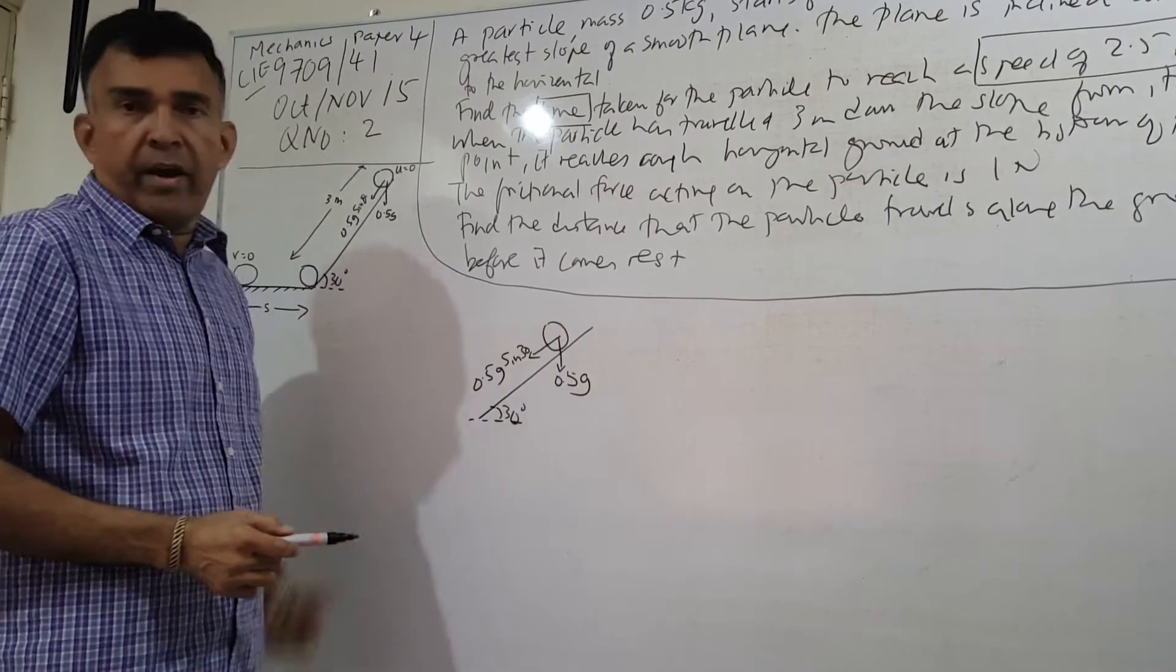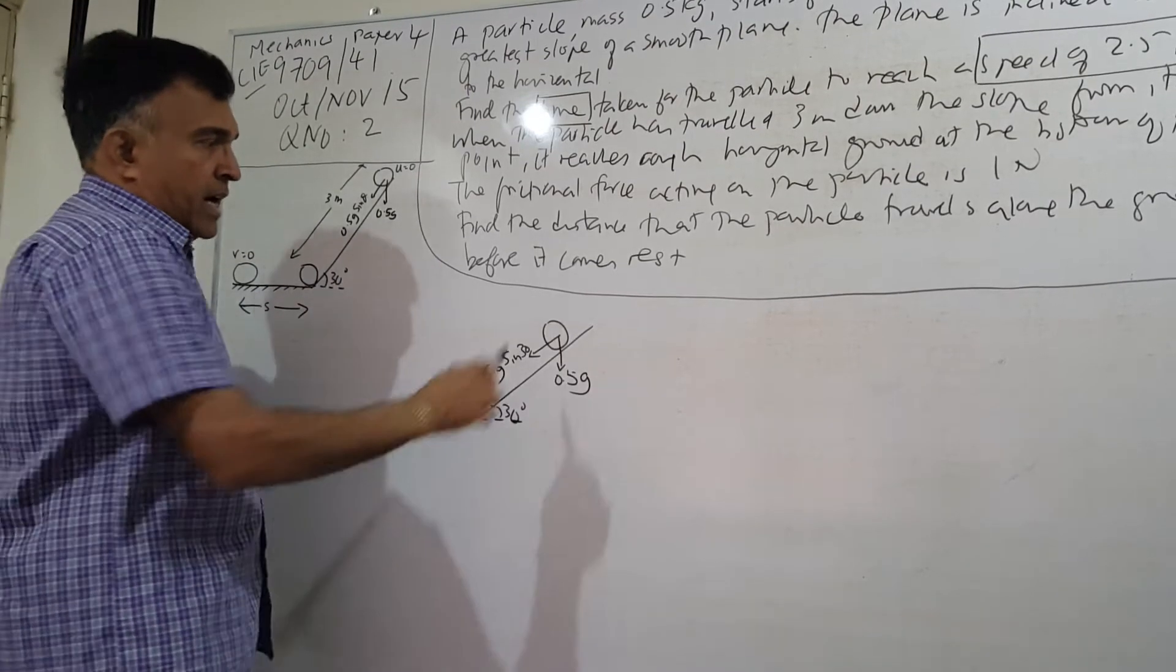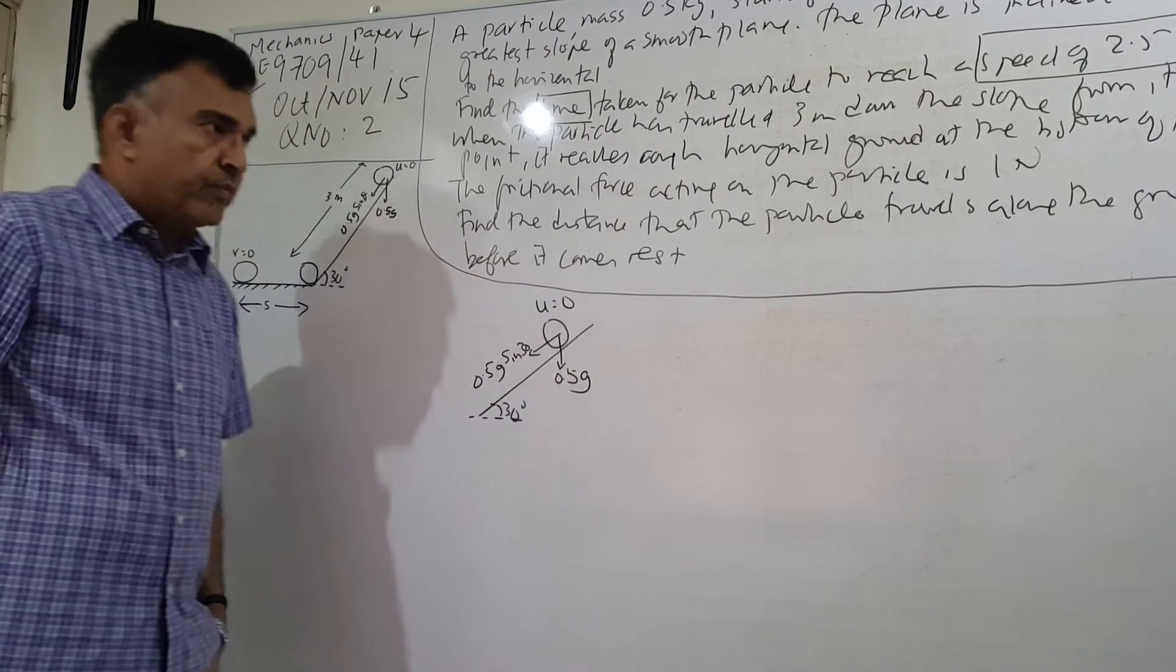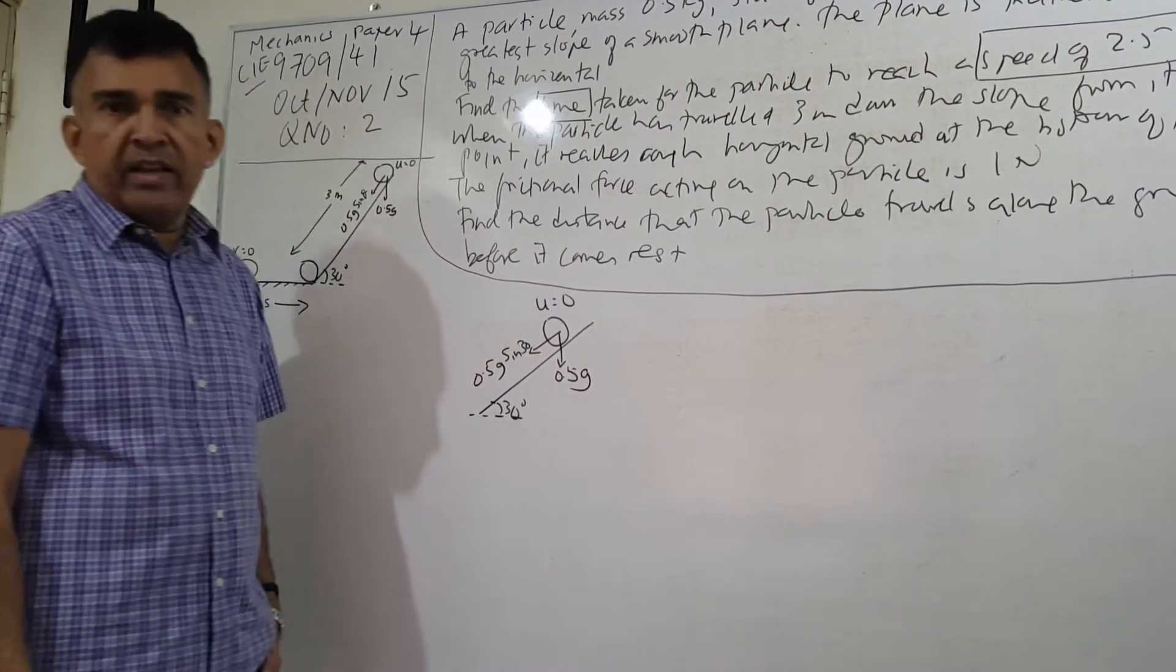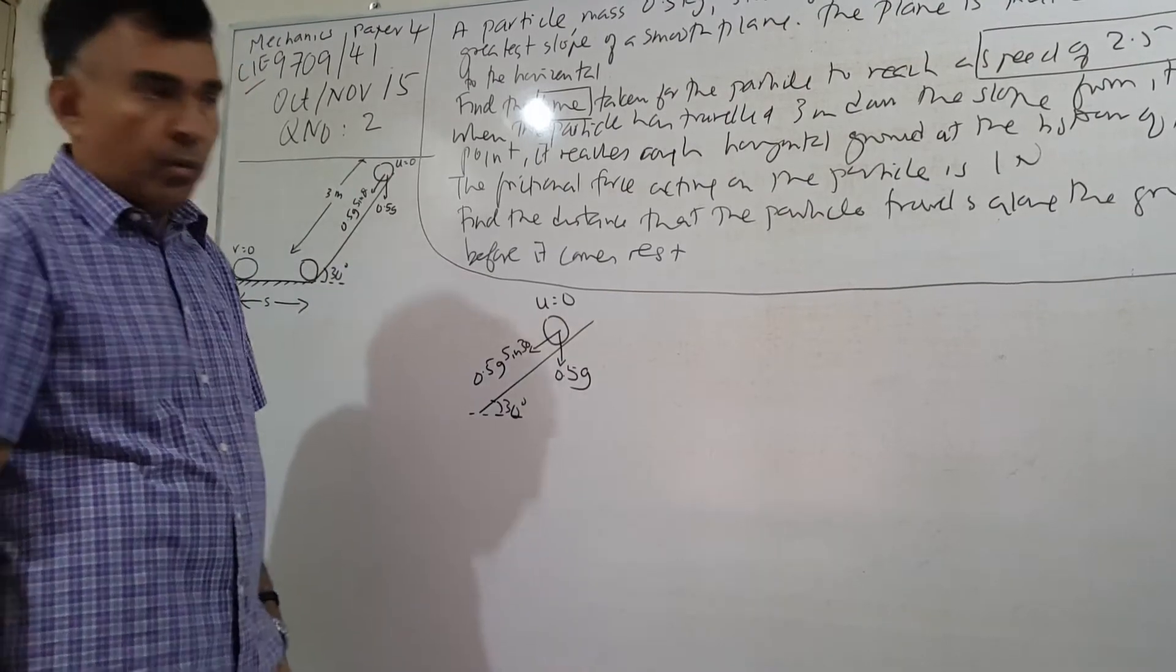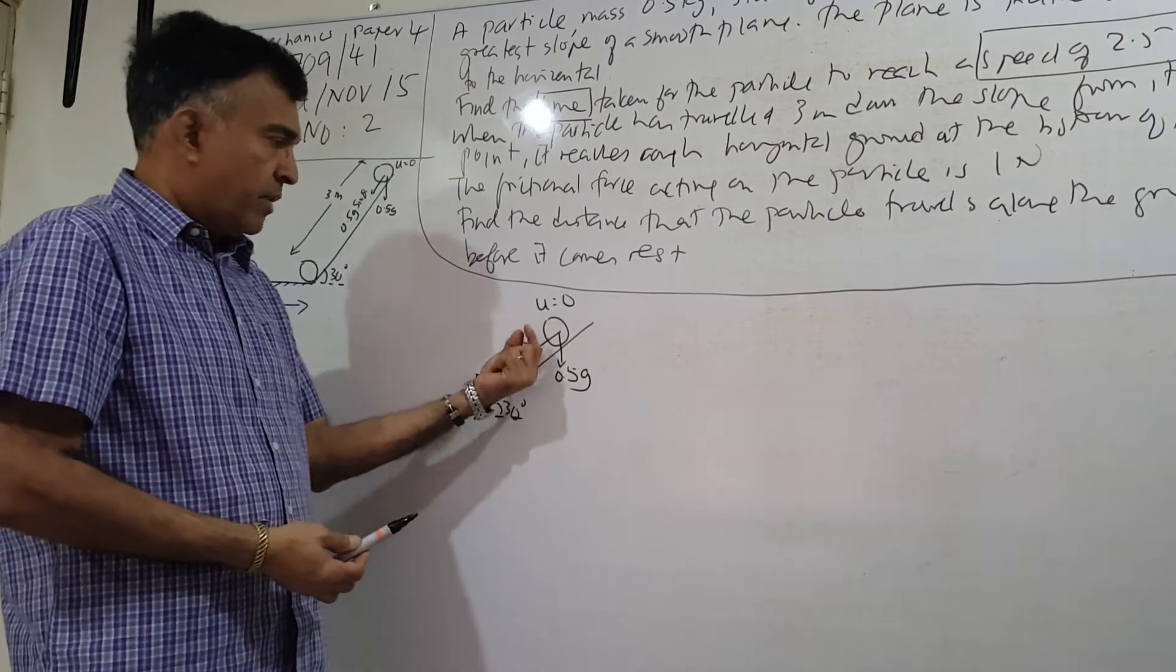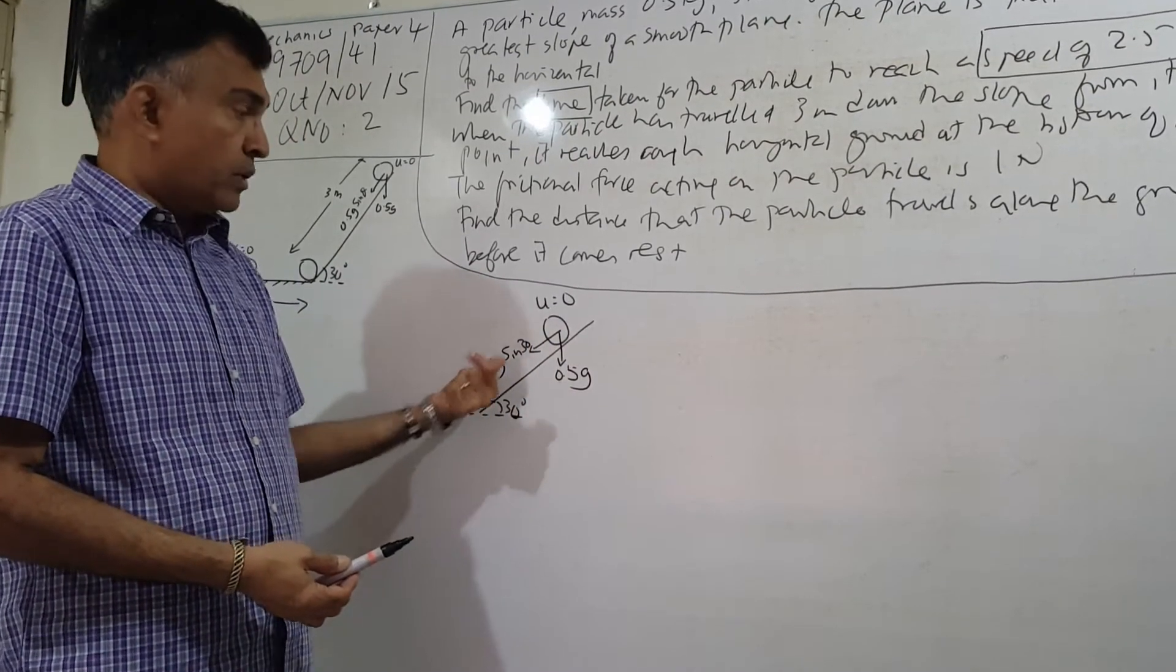Initial speed is zero. First off, let's go ahead and find the acceleration down the slope. The only force acting on this particle is the weight component parallel to the plane.